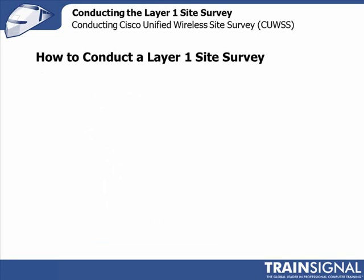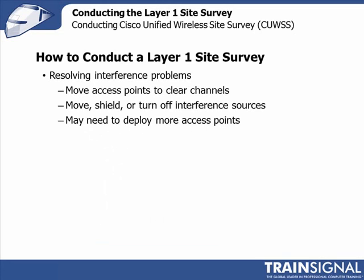There are two things you really want to do when doing a Layer 1 survey. The first is to identify any interference sources and, if possible, resolve them. You can move the access point to a different channel — one that's in a clear spectrum not suffering that interference. For example, since a microwave oven really interferes with the middle to upper part of the 2.4 GHz band, if you're deploying an access point near a microwave oven, you'd probably want to choose channel 1 for that deployment.